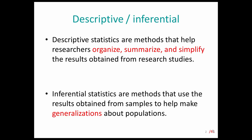One is descriptive and the other one is inferential. Descriptive statistics is basically a method that we use to organize, simplify, or summarize data — things like percentages, averages, numbers, or counting — whatever statistic we use to describe a set of scores. Inferential statistics, on the other hand, are methods in which we collect data on a sample and try to generalize that data to the population.